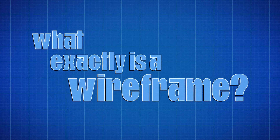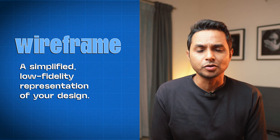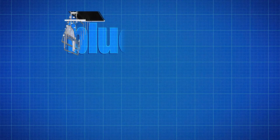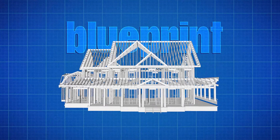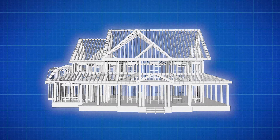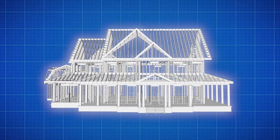So let's start with the basics. What exactly is a wireframe and what is it not? A wireframe is a simplified, low-fidelity representation of your design. Think of it as a blueprint of a building — it outlines the structure without getting into the details. In short, it's the high-level visual plan of your user interface where you are planning the broader structure of a particular page.